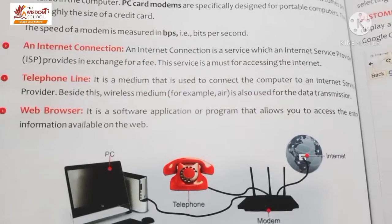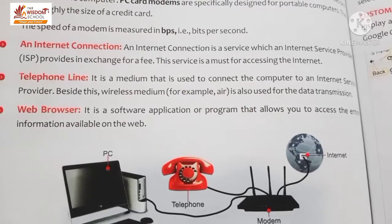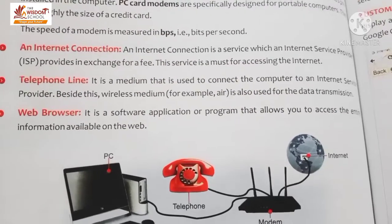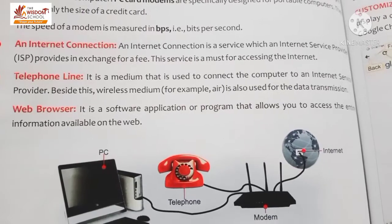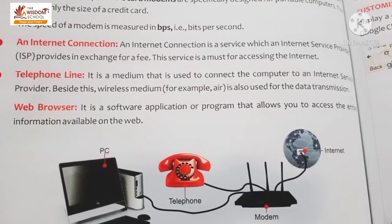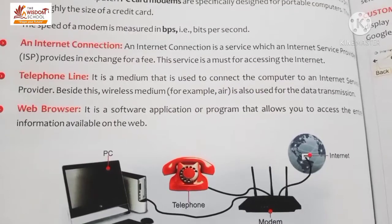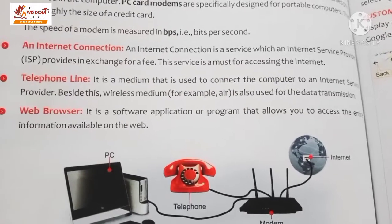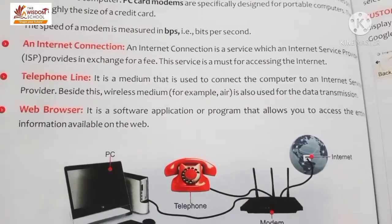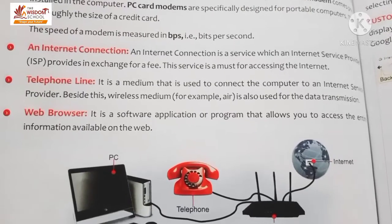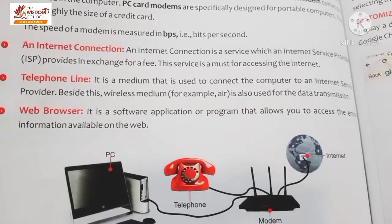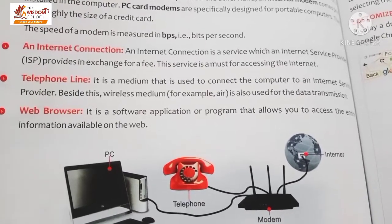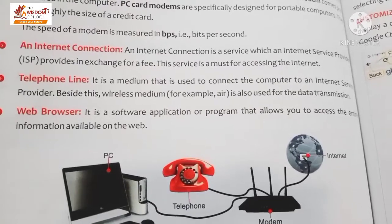Besides this, wireless medium is also used for data transmission. Wireless medium means that we don't use any wires. The telephone line is used as wired medium, whereas wireless medium means through the air - data transmission hoti hai air ke through.